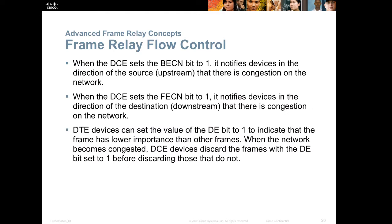Frame Relay has the ability to do BECN and FECN. These are flow control notices sent through LMI that tell your router whether there is upstream or downstream congestion. If your router is informed that the Frame Relay network is congested, it can start marking frames as discard eligible, abbreviated as DE. A discard-eligible frame can be thrown away if there is not enough bandwidth to send it. This only applies when you are in the BE territory — sending more traffic than you've been guaranteed. The network will arbitrarily throw away frames above your guaranteed bandwidth, so your router can set a discard eligibility bit on those frames to control which ones get discarded.